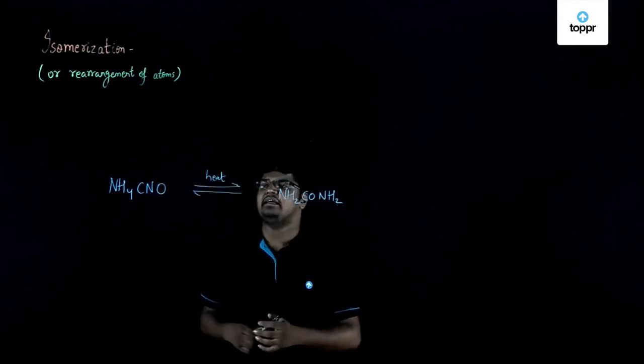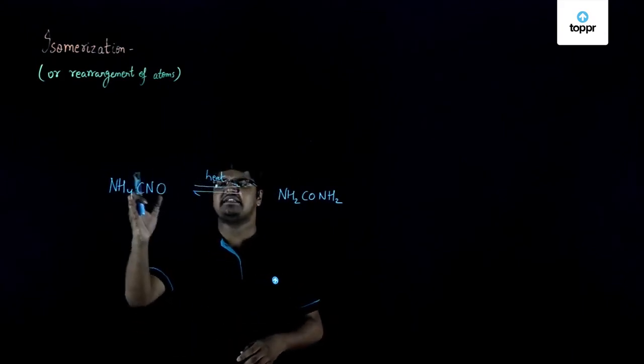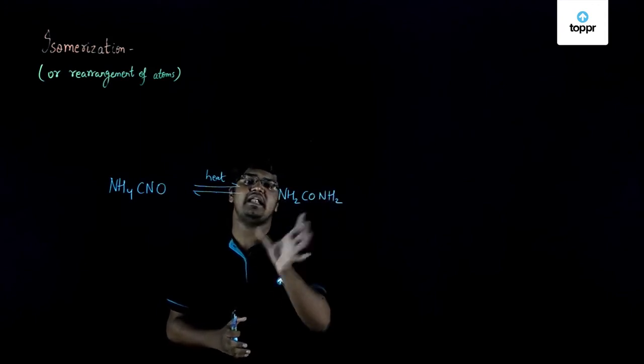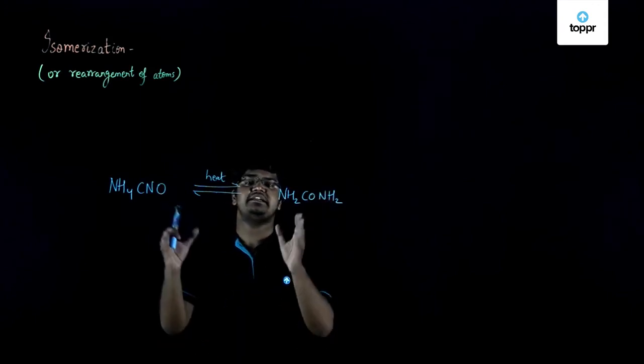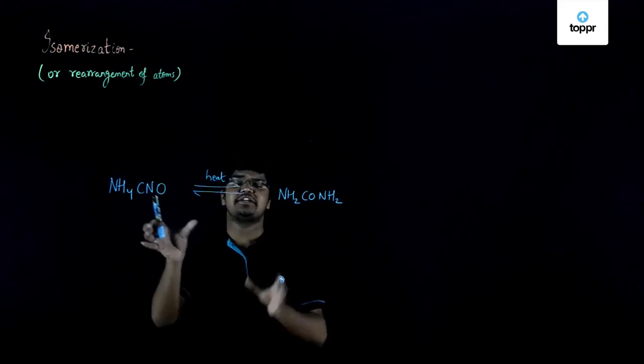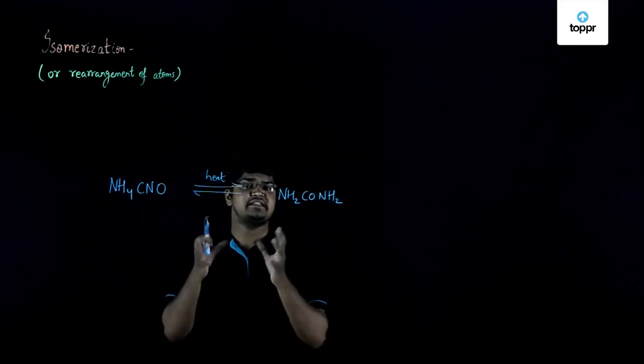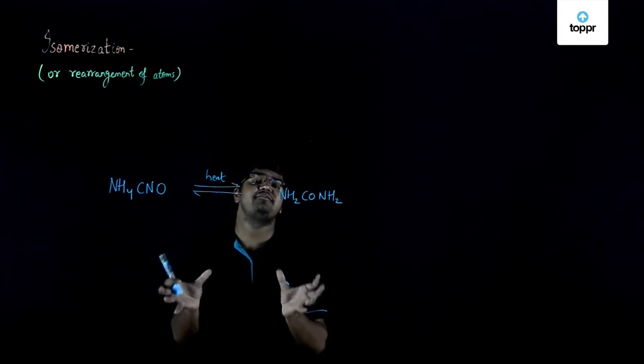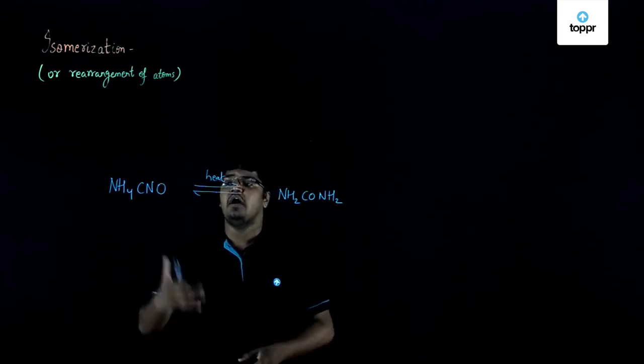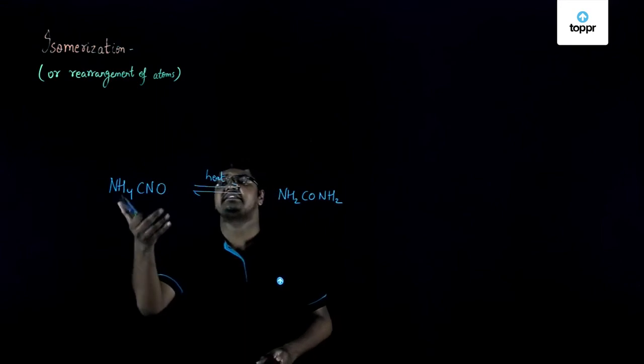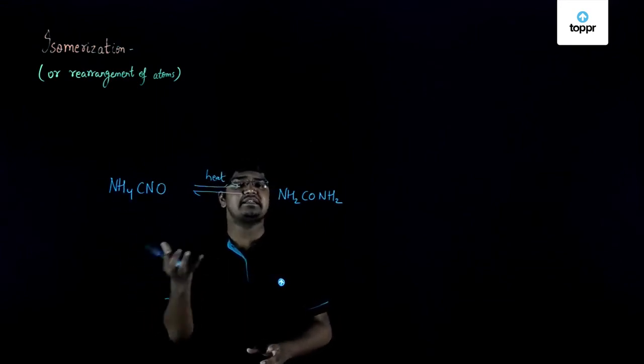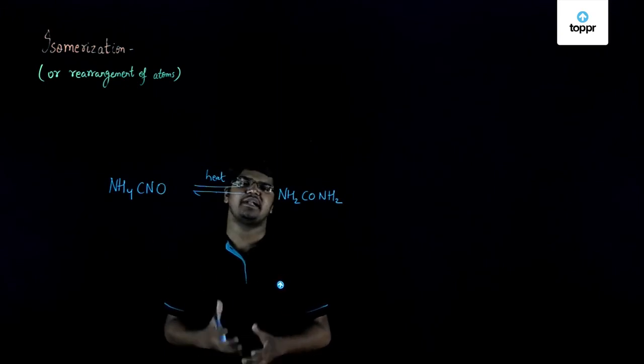Now, the important thing to note is that since we have two N's, four H's, one C and one O here and the same here as well, it does not mean these two compounds are the same. The molecular structures of these compounds are different, and since their molecular structures are different, this is enough to give them different chemical properties. We have obtained urea from NH4CNO from a simple rearrangement of atoms, and this reaction is known as isomerization reaction.